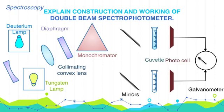Finally, there are two photocells placed. One is connected to the cuvette containing sample solution and the other is connected to the cuvette containing blank or solvent. Finally, these photocells are connected with the computer so that we can get the signal.